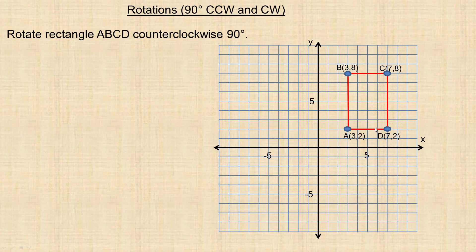We're going to rotate rectangle ABCD counterclockwise 90 degrees, and we'll look at a clockwise example in the second example. Let's take a look at point A first. This point is going to rotate 90 degrees around the origin — you can also think of that as a quarter turn. If you drew a whole circle, this is a quarter of the way around, so that point arcs up to its image.